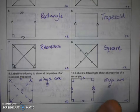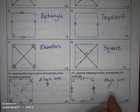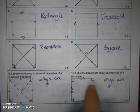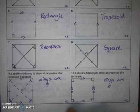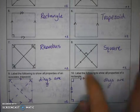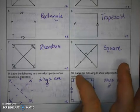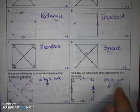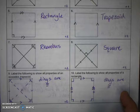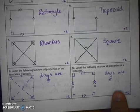Okay, for number 10, we're supposed to label the following information about a rectangle. And so you want four right angles. You want opposite sides parallel here and here. You want opposite sides congruent here and here. And then, again, remember that the diagonals of a rectangle are also congruent, and they bisect each other.